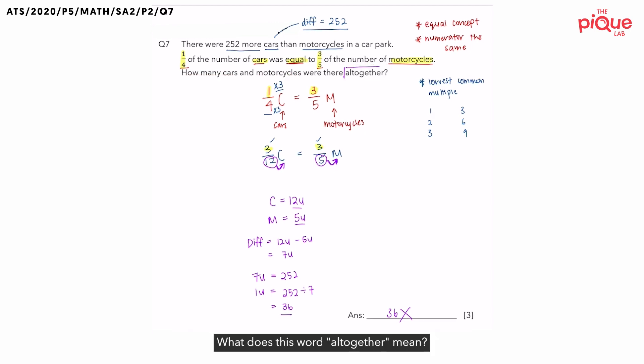What does this word all together mean? All together means that we are looking for the total. Have we found the total? No, we have not found the total. So, we cannot just find out 1 unit and put down 36. Okay? So, we are going to erase this answer.